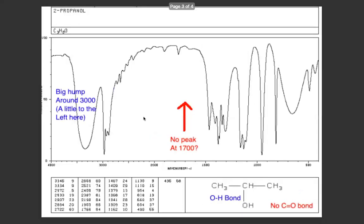Here, I have the big hump anywhere between 2500 and 3500, although this one is a little further to the left. That presence of that hump means there is an OH bond in the molecule, and look, there totally is. This one is 2-propanol. But there's no peak here at 1700.